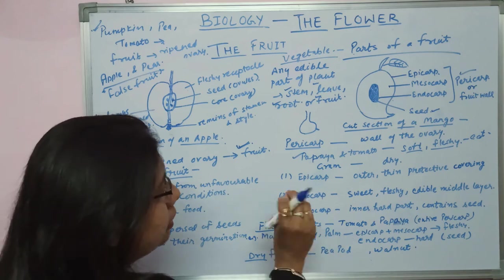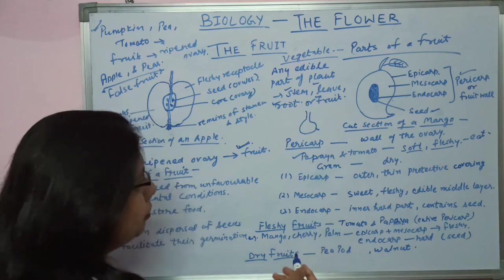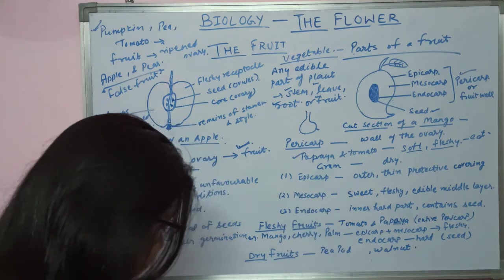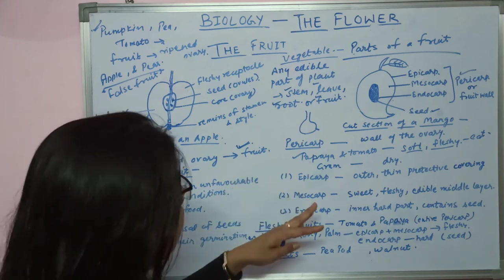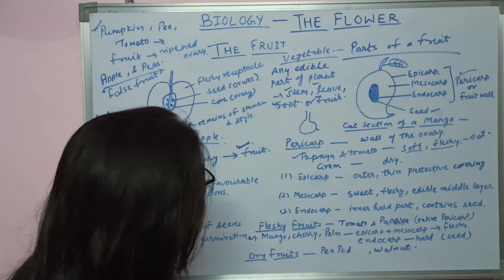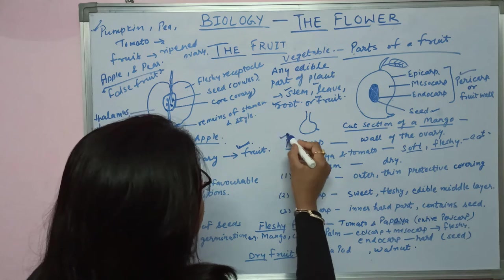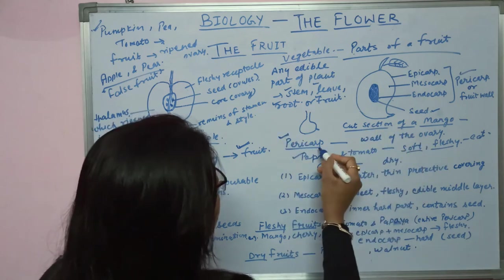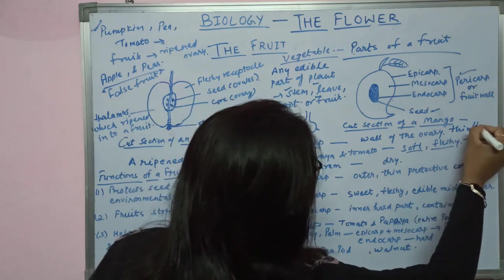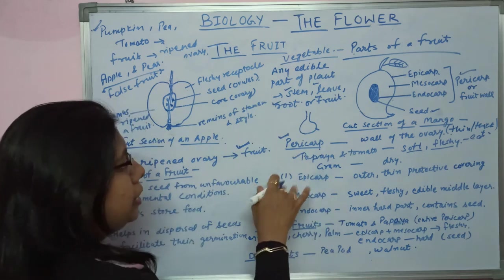The ovules become seeds, which you find inside the papaya and tomato. The pericarp forms from the wall of the ovary, and it can be thin or thick depending on the type of fruit. In papaya and tomato it is very soft and fleshy, while in grain it is very dry.